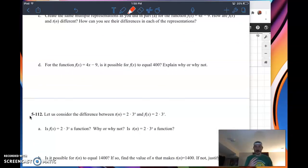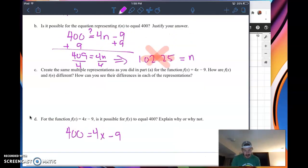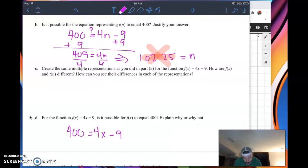For the function f of x equals 4x minus 9, is it possible for f of x to equal 400? The answer is, in this case, yeah, it is. I could do the exact same solving. We set this equal to that. But because in this case I'm solving for x and not n, and x is allowed to be a rational value, 102.25 does not need to be an integer. x definitely can be 102.25. So that definitely works for us.